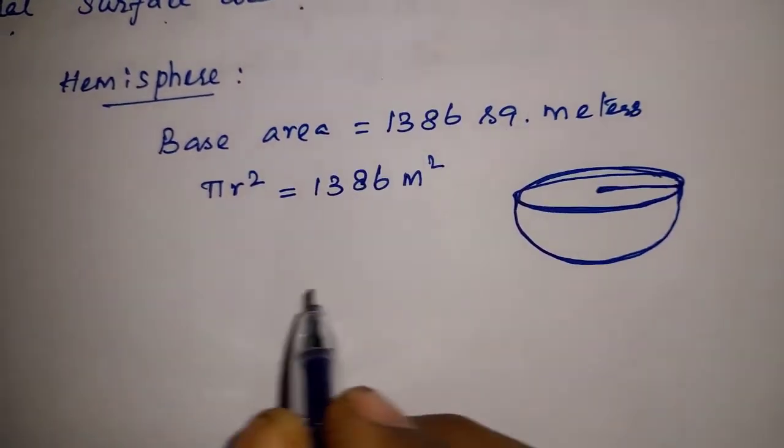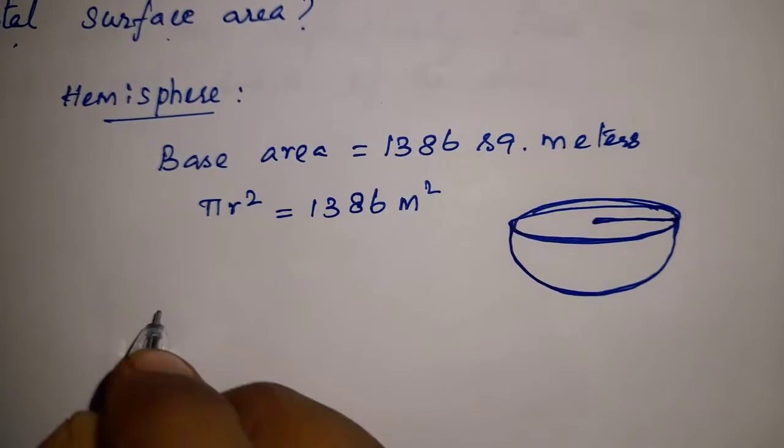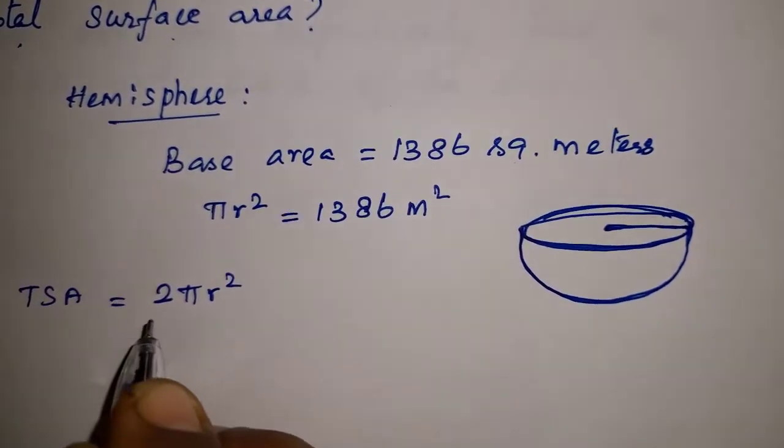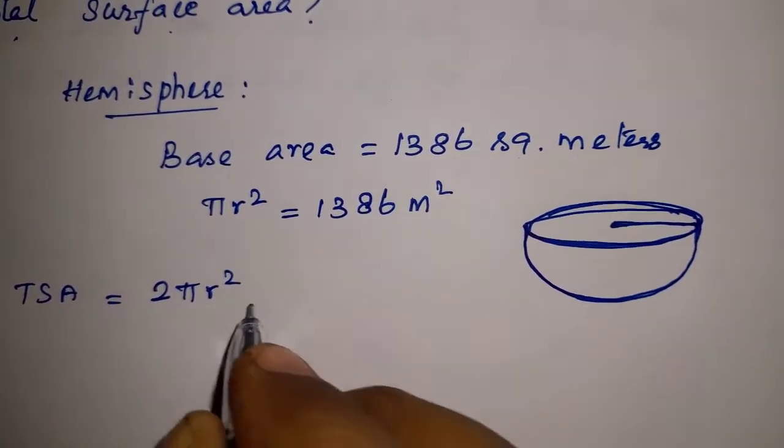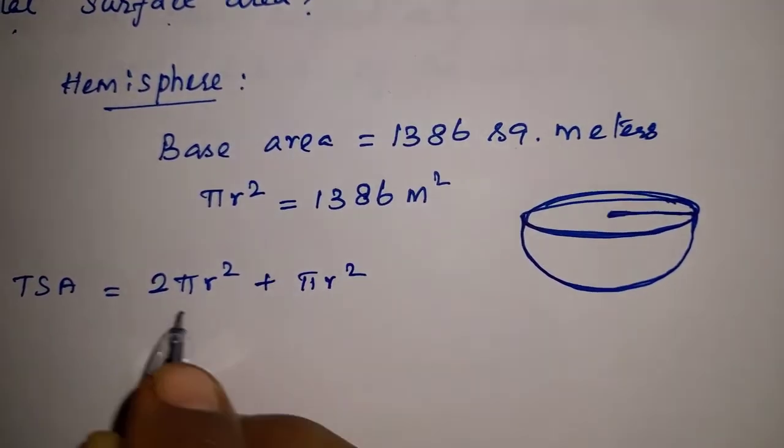Now, the curved area is 2πr². This is the hemisphere. So, curved surface area is 2πr².